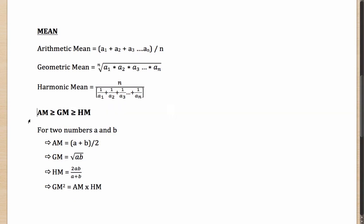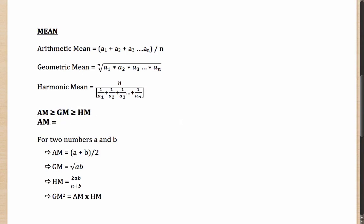Keeping these in mind, there are a couple of important points for any given set of positive values. The arithmetic mean will always be greater than or equal to the geometric mean, and the geometric mean will always be greater than or equal to the harmonic mean. This relationship is always true. When are all three equal? This happens when all the values you are considering are equal.